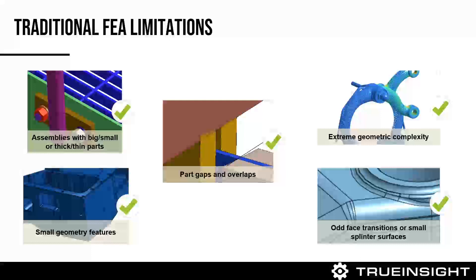Other things that are really cumbersome in FEA: maybe you're working with a heat exchanger that has a lot of different part thicknesses — thin and thick parts. When you have very different thickness parts, you need meshing expertise to assign appropriate element thicknesses. You don't have to do that in SimSolid because you're not actually generating a mesh. Small geometry features and splinter surfaces can also be overcome very easily, versus traditional FEA where you'd spend a lot of time trying to get a good mesh.